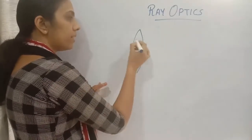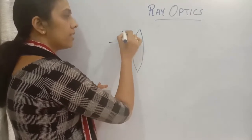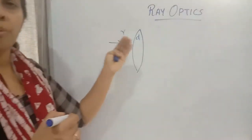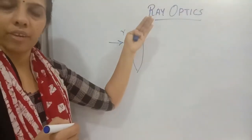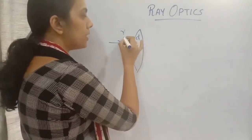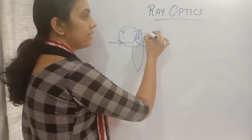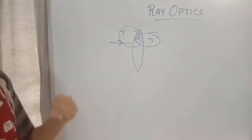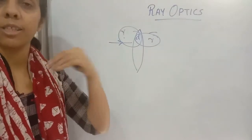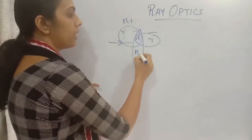When a ray of light is incident from this side to this one, this is a rarer medium and this is a denser medium. Rarer to denser medium means the ray will be refracting towards the normal. So one refraction happens here, and then from denser to rarer is the second refraction.